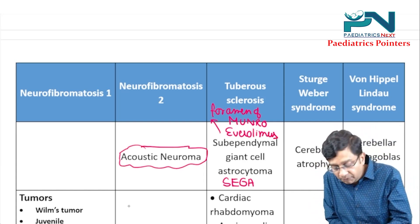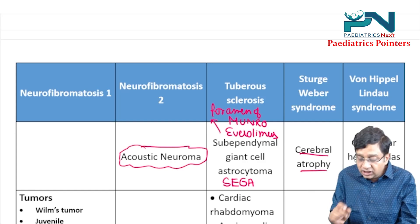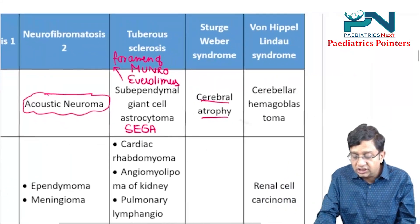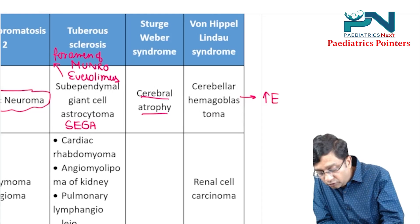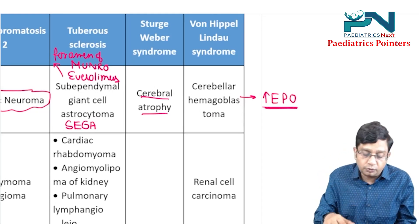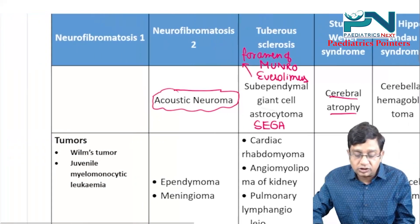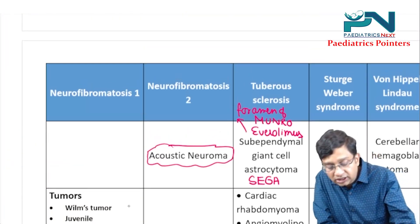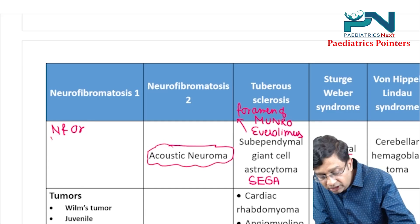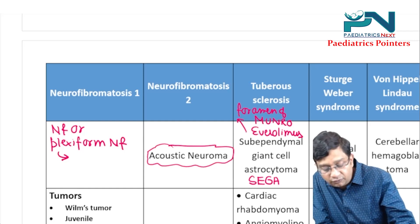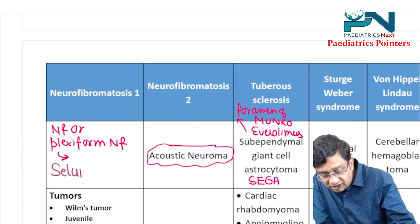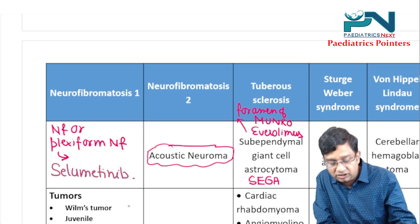In Sturge-Weber, there is cerebral atrophy. In VHL, you get cerebellar hemangioblastomas, which can produce erythropoietin ectopically, leading to polycythemia. In NF1, you can get neurofibromas or plexiform neurofibromas, and the drug given for plexiform neurofibroma is selumetinib.